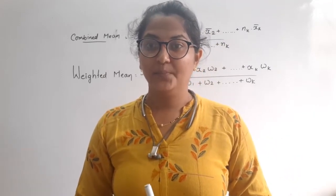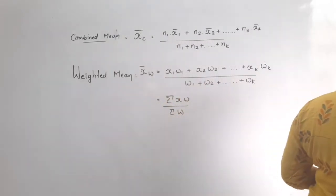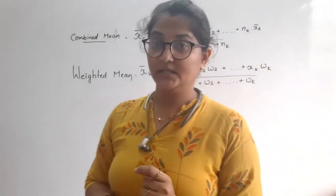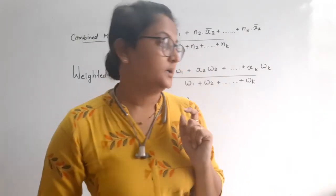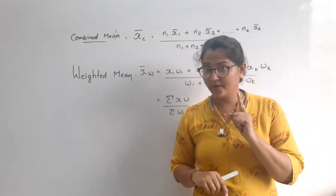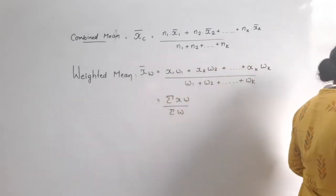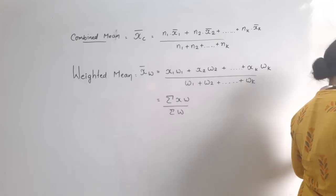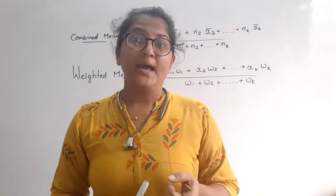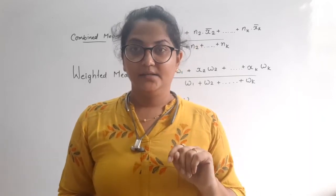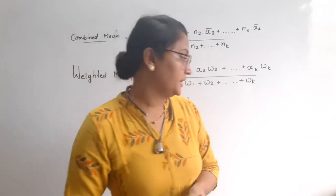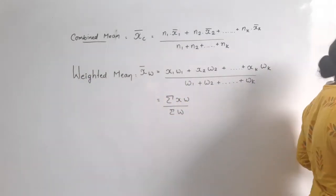Let's get started with Exercise 3.2, sum number 1. The mean daily wage paid to 75 skilled workers at a factory was $280. The mean daily wages paid to 125 unskilled workers was $150. So n1 equals 75, x bar 1 equals $280. And n2 equals 125, x bar 2 equals $150. Clear?